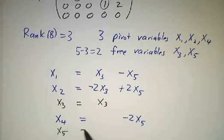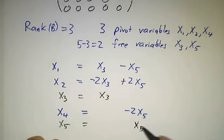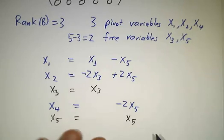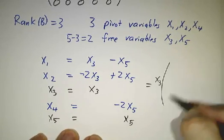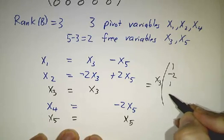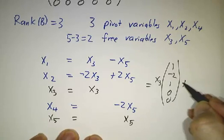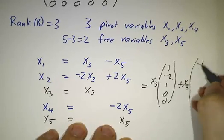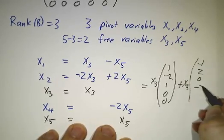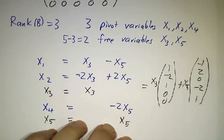And then we put in our extra equations. x3 is x3, x5 is x5, and we've just written that x is x3 times one vector plus x5 times another vector. And there we go.